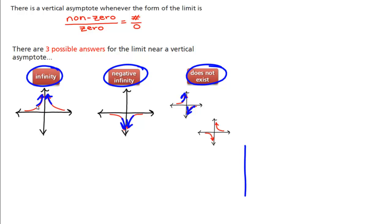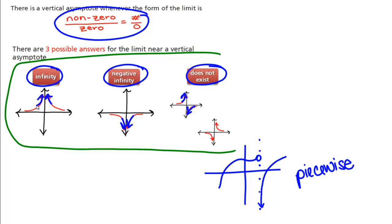You would also get does not exist with this strange picture we talked about earlier, where here you have a hole, and then on this side, you have an asymptote. But we're not going to see any functions that look like that unless it's a piecewise function. So if you have an algebraic function that's giving you a non-zero number over zero, it is going to be one of these cases up here, and you're guaranteed that on the left side and the right side, the answer has to be either infinity or negative infinity.